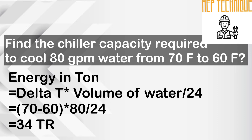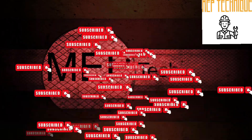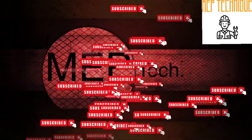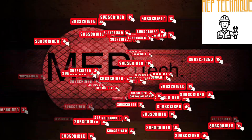That means we need 34 TR of chiller to cool 80 GPM water from 70 degree Fahrenheit to 60 degree Fahrenheit. Thank you for your time. Please subscribe to my channel and press the bell icon, and do like, comment, and share if the video is really helpful for you. Thank you very much for your time.